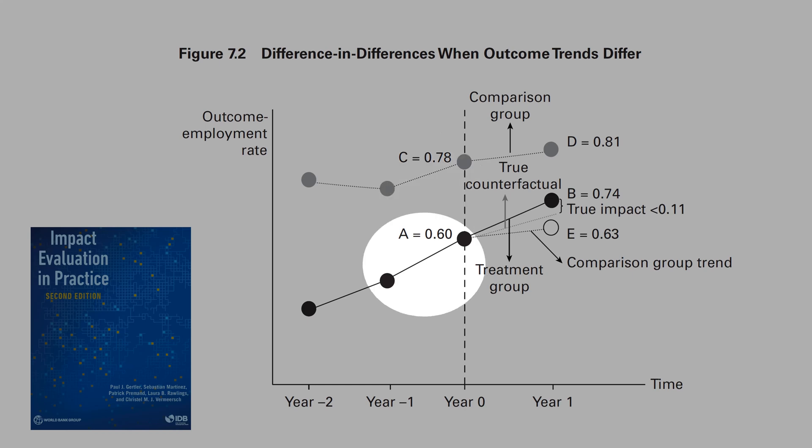But if you look carefully, the treatment group has a slightly steeper line. These generate a positive bias, where you overestimate the impact of the treatment variable.